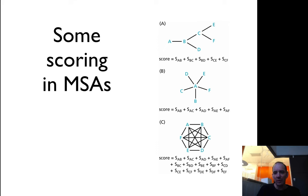You can think about the score—you can take the score of the first sequence to all the others. That's what's called a star. That's what you have in option B here.